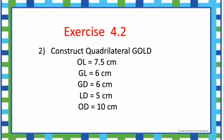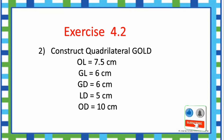Second question: Construct quadrilateral GOLD. OL is equal to 7.5 cm, GL is equal to 6 cm, GD is equal to 6 cm, LD is equal to 5 cm, OD is equal to 10 cm. Now we can see how to construct quadrilateral GOLD.